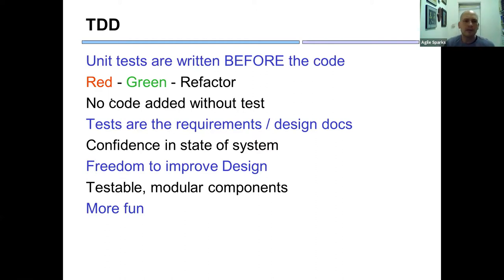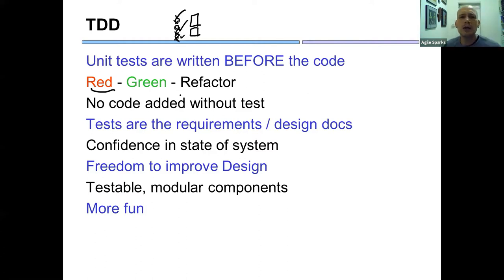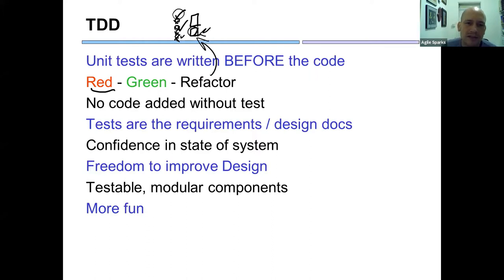TDD is a practice where unit tests are written before the classes. You start with all your tests failing — that's red. Then as you implement each class, tests go from red to green. A third important thing is refactoring: you write code as fast as you can using the KISS principle, then go back, improve it, and run your tests again to make sure everything still works.